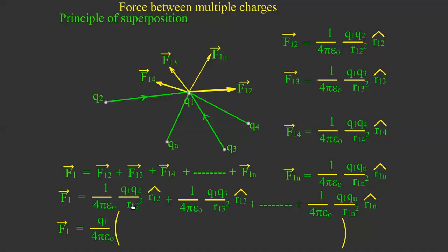The remaining terms are Q2 by R12 squared R12 cap, plus Q3 divided by R13 squared R13 cap, and so on, plus Qn divided by R1n squared R1n cap. So from here, plus this much, plus this much. This is a summation.